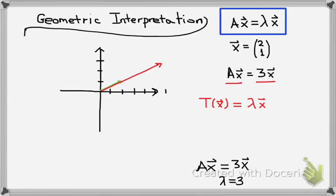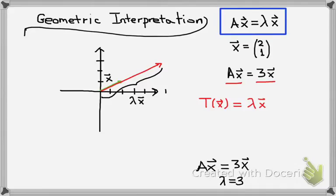When we multiply the eigenvector by matrix A, which acts as a linear transformation, it scales the vector x up by some value which is lambda — the eigenvalue. Here we have the vector x, and shown in red is lambda times x, or 3 times x.